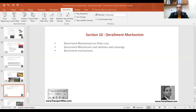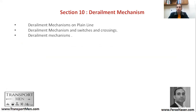So without further ado, let's start to have a look at the section content. This is Section 10. We will be discussing derailment mechanisms on plane line, derailment mechanisms on switches and crossings, and also derailment mechanisms in other occasions — some of them because of wind, some of them because of load or shipment that a train is carrying.